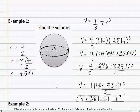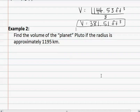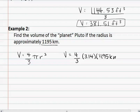Let's look at a story problem in example two. Find the volume of the planet Pluto if the radius is approximately 1,195 kilometers. We once again need to use the formula V equals four-thirds pi r cubed. Plugging in the values we have, we know that pi is 3.14 and that the radius given was 1,195 kilometers cubed.